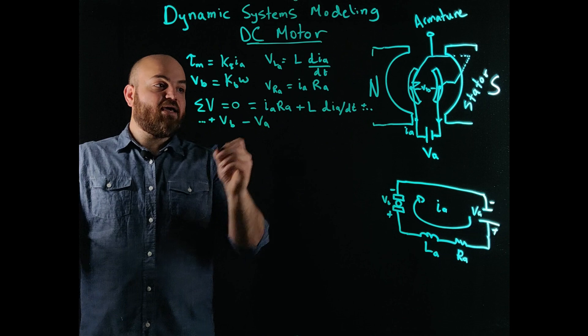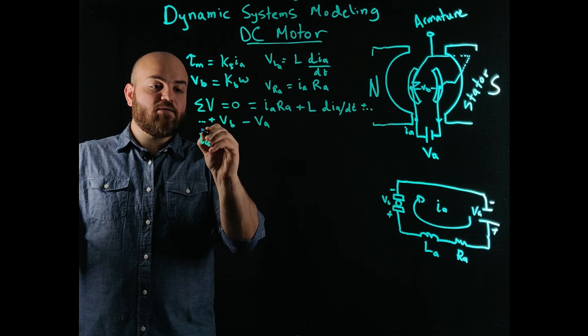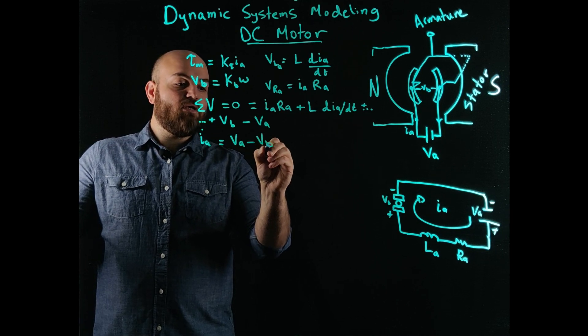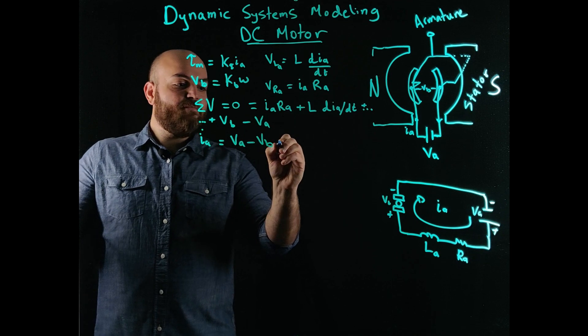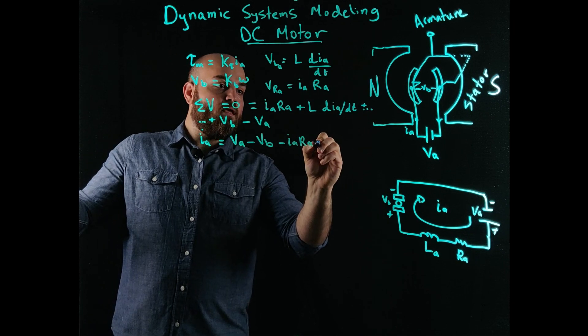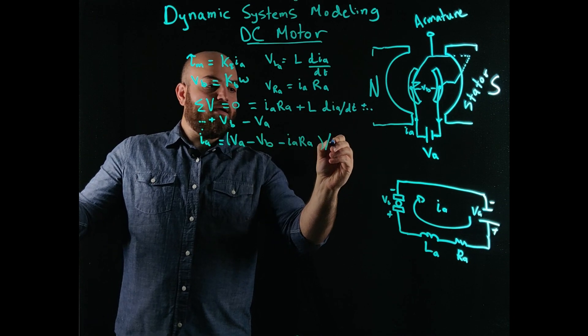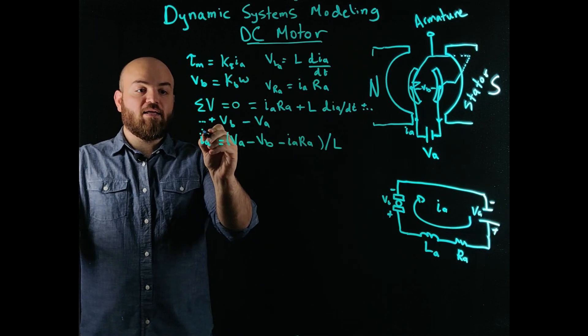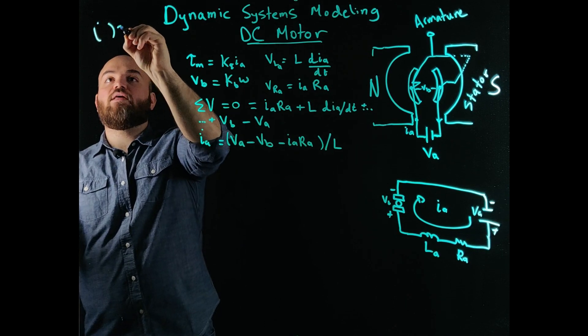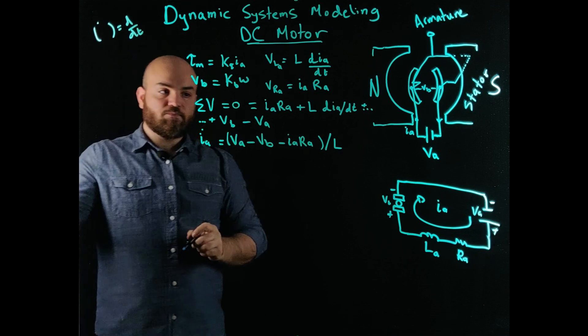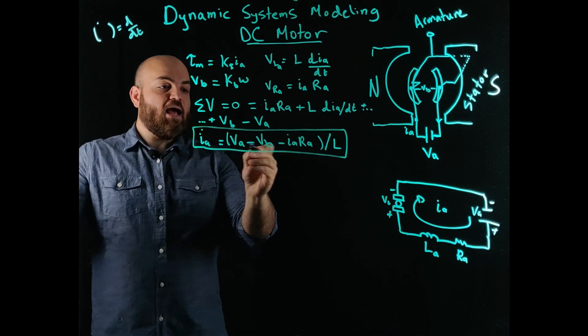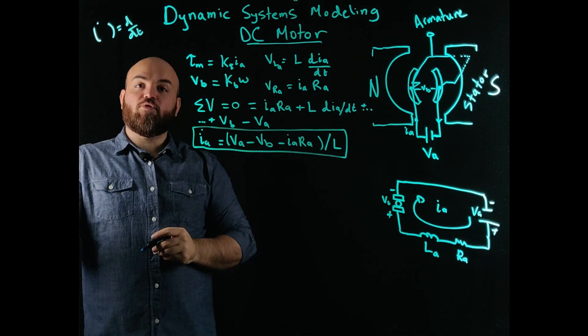If I rearrange that, I can write it as IA dot is equal to the voltage in the armature minus voltage in the back EMF minus IA RA divided by the capacitance. And I dot here, this dot represents the operator, which is the derivative over time. So if I say something dot, that means D by dt. So here's my first equation that tells me how my current changes over time in the system.